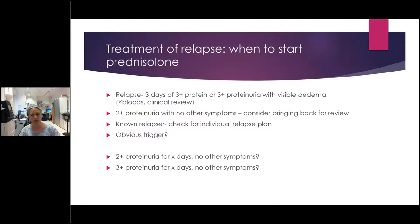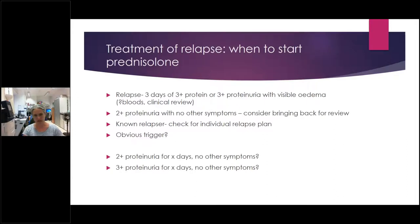If a child has a known relapse pattern, check for an individual relapse plan. Also consider whether there's a trigger — viral illnesses, especially URTIs in winter, are probably the biggest trigger, accounting for about half of cases. Many children have a very predictable cycle: cough or cold leads to proteinuria and relapse. A wait-and-see approach may work for less obvious triggers or when protein seems to be trending down, though parental preference will come into that.